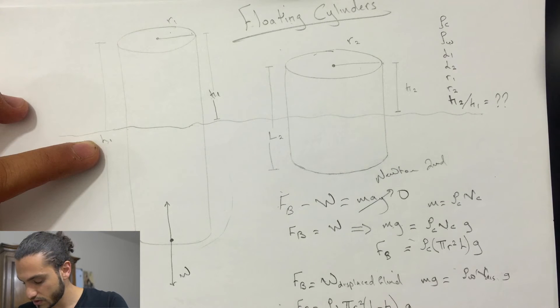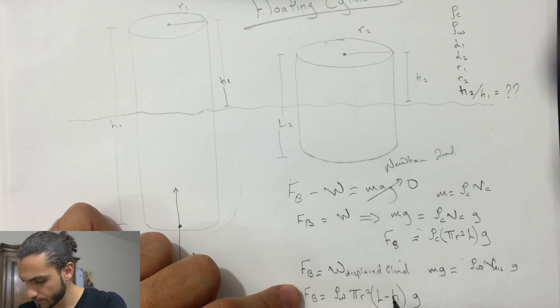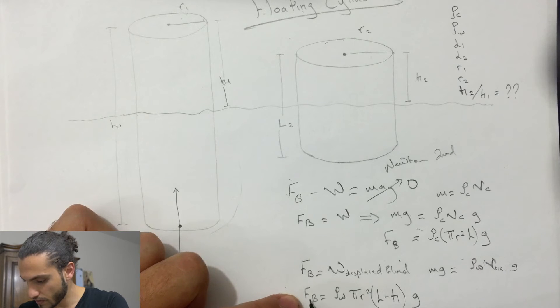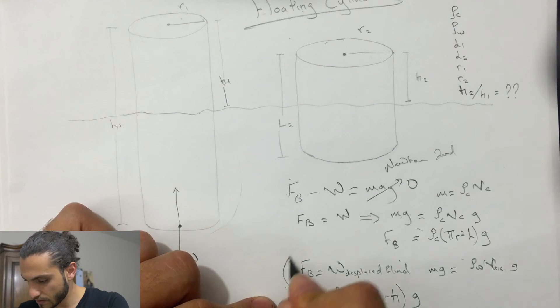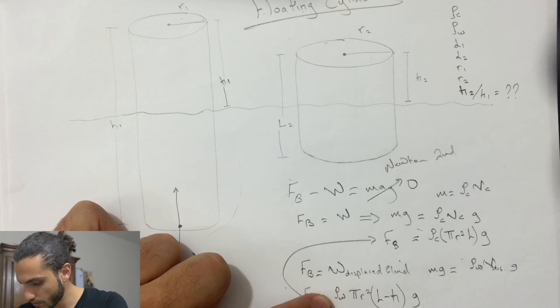So we got these two equations, so let's set these equal to each other. This guy and this guy, so rho C pi r squared L G is equal to rho W pi r squared (L minus H) G.